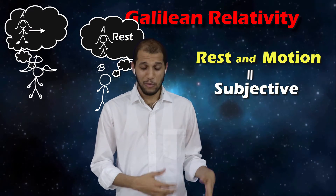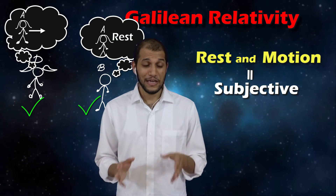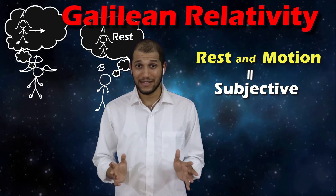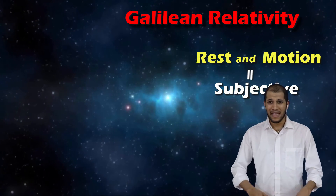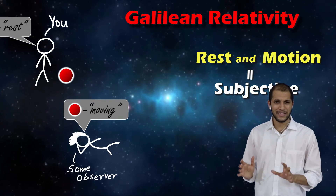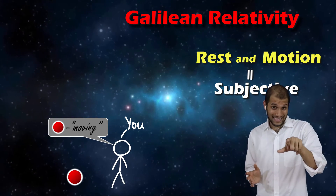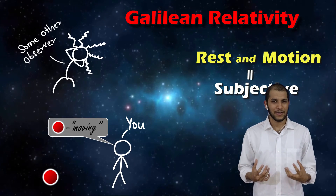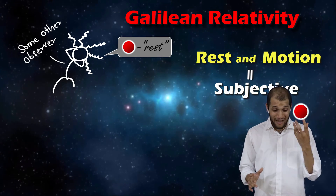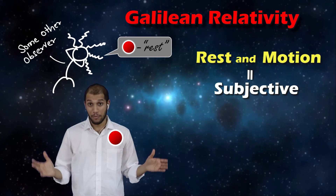Some observers will see Alice to be in motion while some observers will see Alice to be at rest, and all of them are right according to their own perspectives. So rest and motion are relative terms. That's the whole idea behind the word Galilean relativity. If you find a particle which you say is at rest, I can always find some observer who will disagree and say that same particle is moving. Likewise, if you find a particle which is in motion as seen by you, I will be able to find some observer who will say that particle is at rest as seen by them. So rest and motion are the same things — every particle can be thought of as at rest and in motion at the same time, from different perspectives.